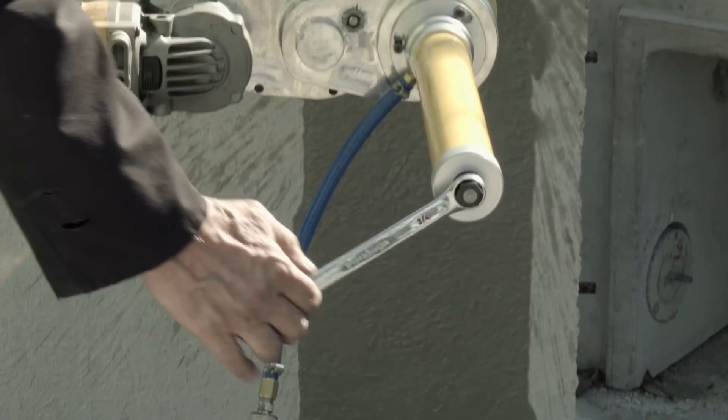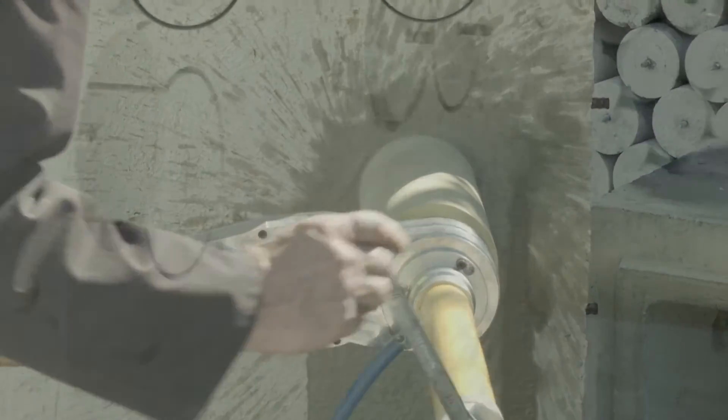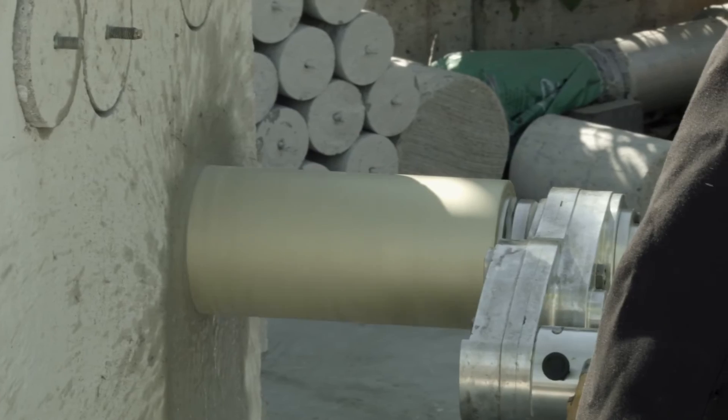Begin drilling by switching on the drill motor and rotating the feed handle clockwise. Make sure to hold the grinder handle firmly.